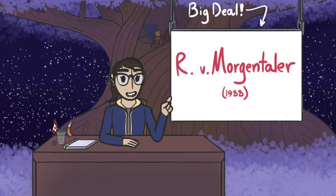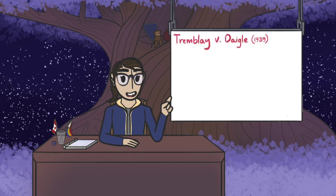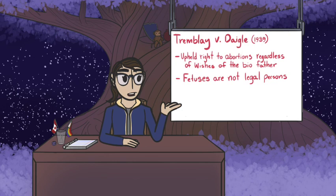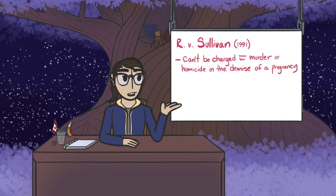So yeah, R.V. Morgenthaler is a big deal, but it's not the only important court ruling in Canadian abortion. There's also the 1989 case Tremblay v. Daigle, which upheld the right for someone to have an abortion regardless of the wishes of the fetus's biological father. The Supreme Court also found that fetuses do not become a legal person or attain the rights of a legal person until they are fully born. Second, there's the 1991 case R.V. Sullivan, which found that a person can't be charged with murder or homicide in the demise of a fetus.